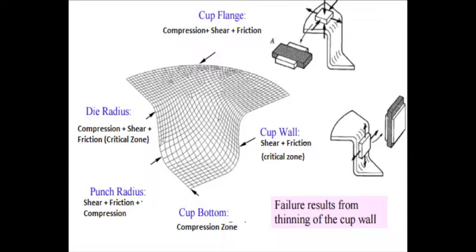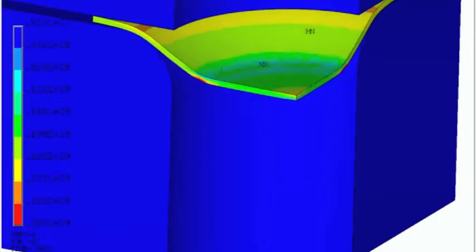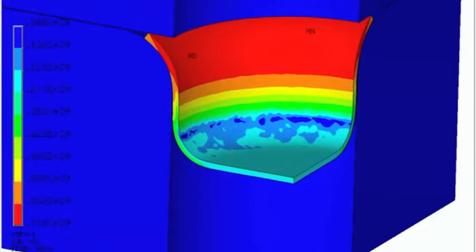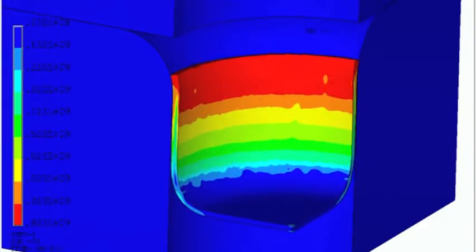The major forces on the blank are shear, friction, compression and drawing stresses. Maximum forces are near the die edges, with failure occurring when the shear stress on the edges exceeds its maximum limit or when the cup walls become too thin.